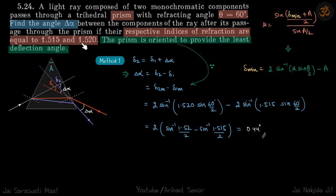So quite obviously, if the mu is more, that ray will deflect more. So mu of this violet light, for example, is going to be 1.52 and that of the red ray will be 1.515. We need to find the angle alpha between the component of rays after it passes through the prism. So after they pass through the prism, angle between them is delta alpha, which we need to calculate.